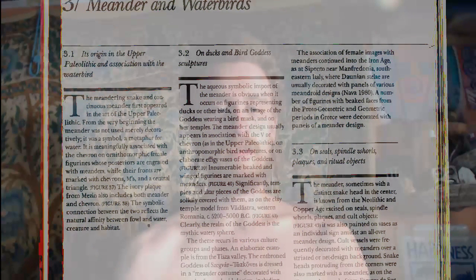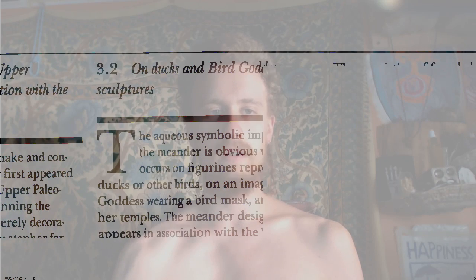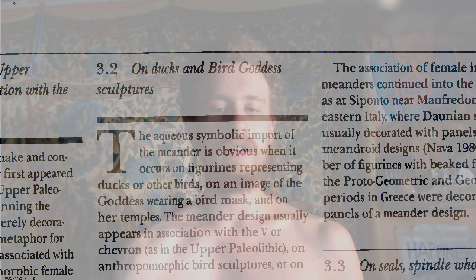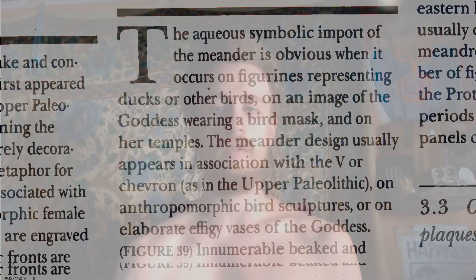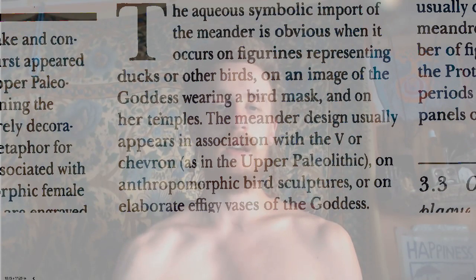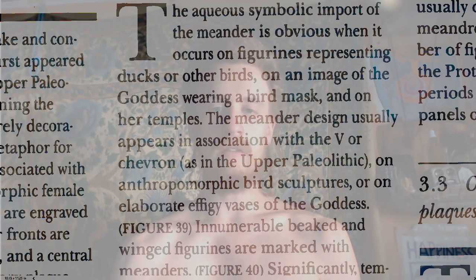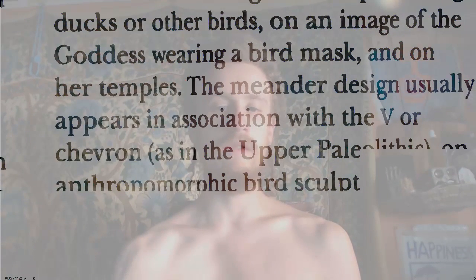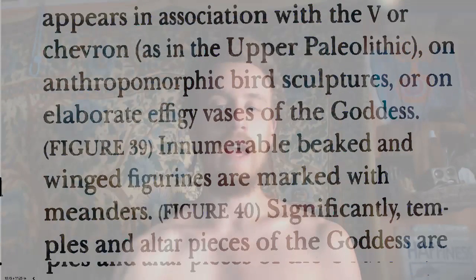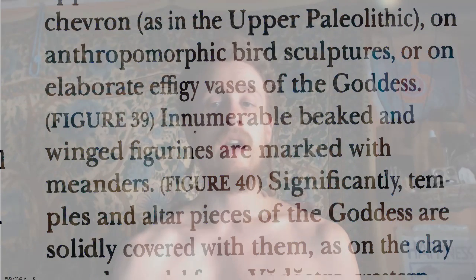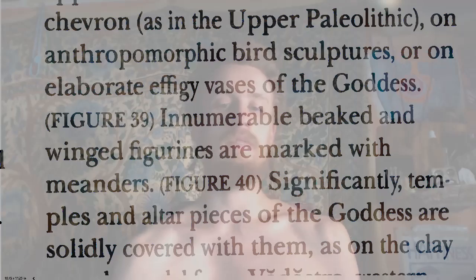The symbolic connection between the two reflects the natural affinity between fowl and water — creature and habitat. Now let's read the next section on ducks and bird goddess sculptures. The aqueous symbolic import of the meander is obvious when it occurs on figurines representing ducks or other birds, on an image of the goddess wearing a bird mask on her temples. The meander design usually appears in association with the V or chevron, on anthropomorphic bird sculptures, or on elaborate effigy vases of the goddess — figure 39. Innumerable beaked and winged figurines are marked with meanders — figure 40.